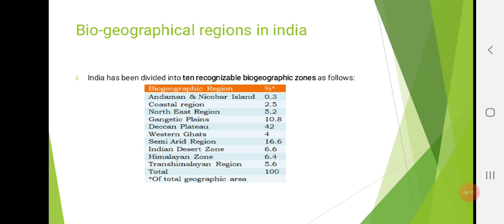After that, we have seen biogeographical regions in India. Here, you can see one image. So, total three, six, nine, ten. India is divided into ten recognizable biogeographic zones. So, here they have listed Andaman and Nicobar, coastal region, northeast region, Gangetic plains, Deccan plateau, western Ghats, semi-arid region, Indian desert zone, Himalaya zone, Trans-Himalayan region. So, these are the ten different biogeographical regions of India.